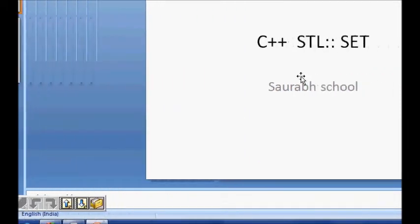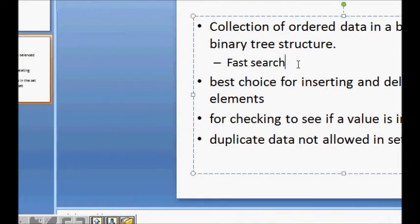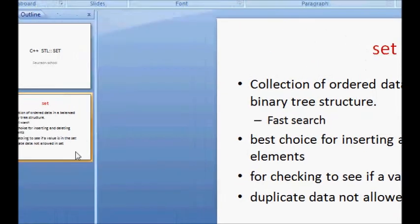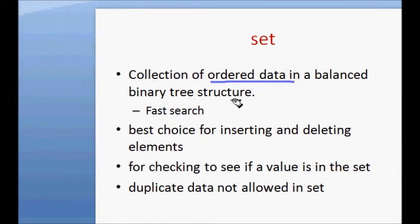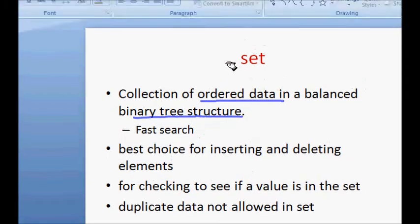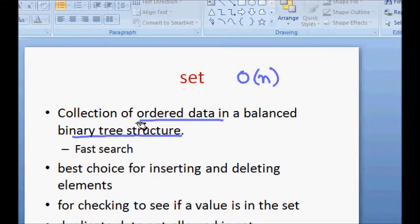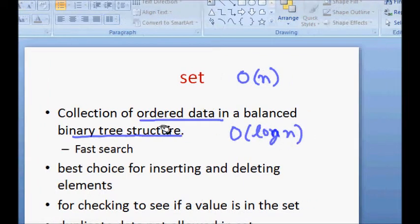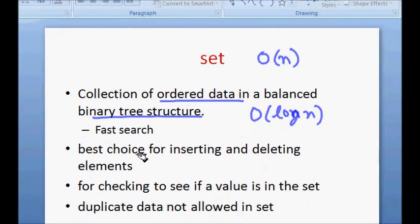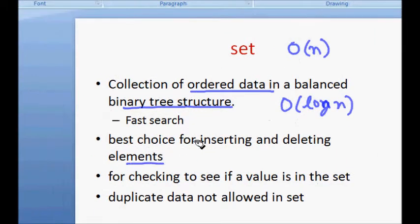Let's see some of the properties of set. It is a collection of ordered data that is stored in a balanced binary tree. Because it is stored in a binary tree, search is much faster. If you have a vector and you search, it will be O(n), but in a set, search is very fast — you can search in O(log n) time.